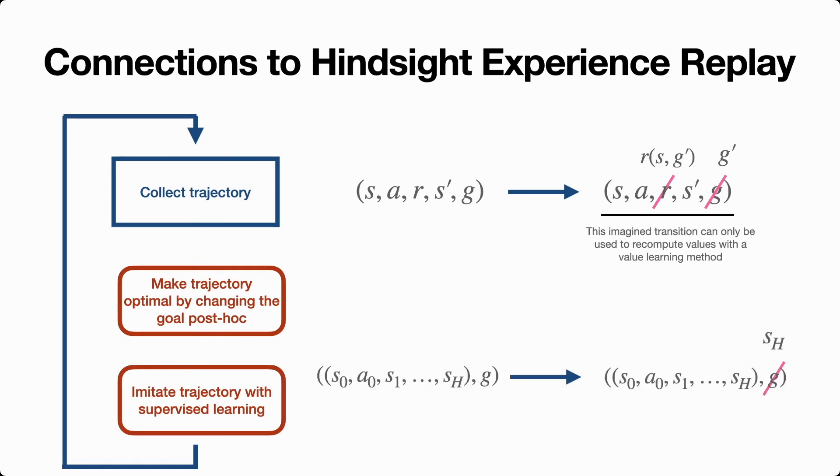GCSL, on the other hand, only relabels the goal to be one of the achieved goal states later in the trajectory. It does so with the realization that only for this specific choice of imagined goal, we have something stronger. We no longer have to use this fictitious transition to estimate a value function, we can actually use it instead as a demonstration of optimal behavior. This allows us to move away from this unstable learning primitive of temporal difference learning and instead switch it with a more robust and stable one, imitation learning. This is a big conceptual gap, because even if we try to mimic GCSL's choice of goals with hindsight experience replay, we won't recover anything like this algorithm, because under the hood, HER still needs to use this imagined data to learn a value function, whereas GCSL uses it to directly learn a policy with supervised learning.